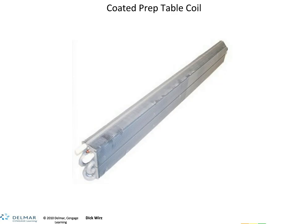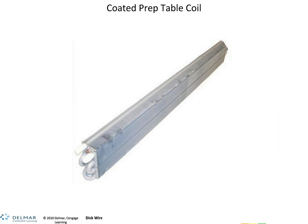The coated prep table coil is used in sandwich and pizza prep tables where product is kept in canisters and the sandwich is made right there on top of the cooler. These are coated with a special coating because you usually have tomatoes, ketchup, and other vegetables in there. The acids, especially from the tomatoes and ketchup, really eat away at the coil. So these are coated to protect the copper and the aluminum fins.